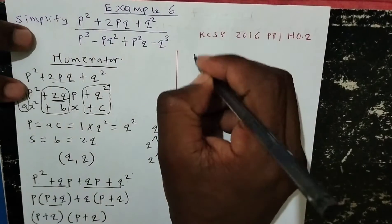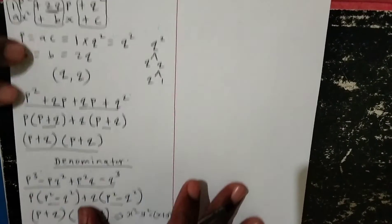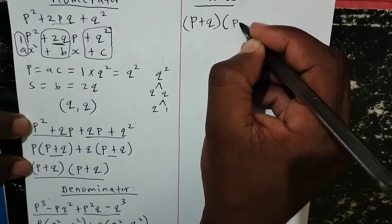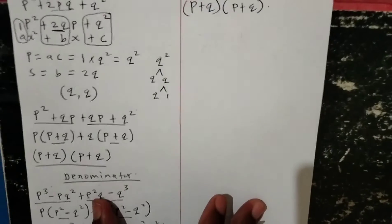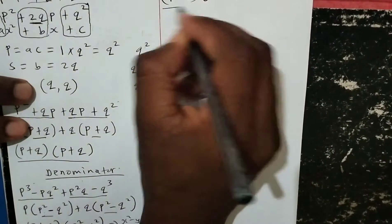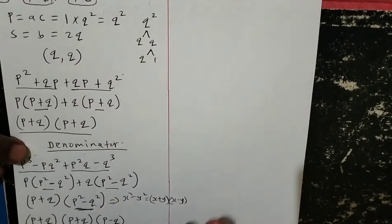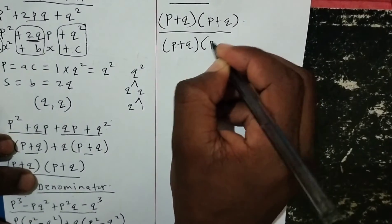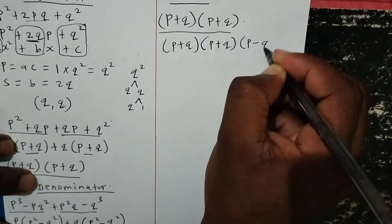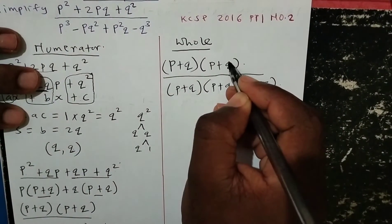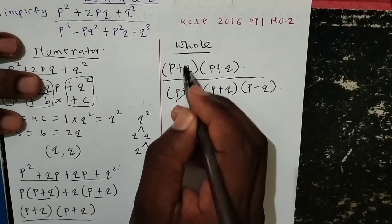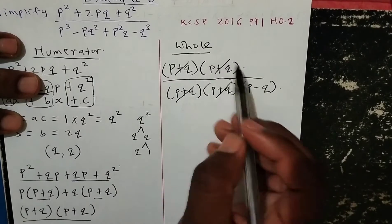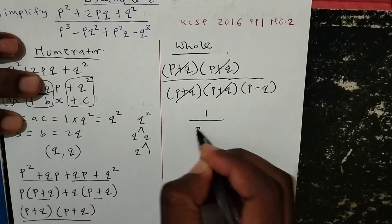Now we combine numerator over denominator. The numerator was (p plus q)(p plus q), and the denominator is (p plus q)(p plus q)(p minus q). We cancel (p plus q) with (p plus q), and the second (p plus q) also cancels, leaving 1 on the numerator. The final answer is 1 over (p minus q), and we cannot simplify beyond that point.